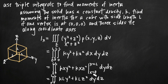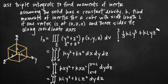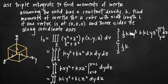Next, integrating with respect to y, we get the integral from 0 to l of (1/3)kly³ + klyz², evaluated from y = 0 to y = l, dz. Plugging in y = l gives (1/3)kl·l³ + kl·l·z², which simplifies to (1/3)kl⁴ + kl²z². Plugging in y = 0 gives 0, so we're left with the integral from 0 to l of (1/3)kl⁴ + kl²z² dz.